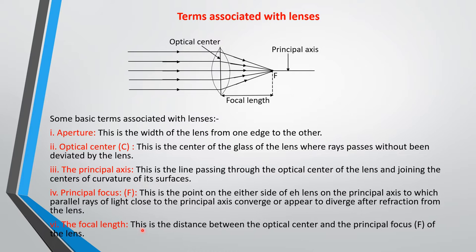The focal length is the distance between the optical center and the principal focus. A lens has two principal foci. So in the drawing of a lens, the line running through the center is the principal axis, the point where rays appear to converge is the principal focus, and the center of the lens is the optical center. It is important to take note of all these basic terms.